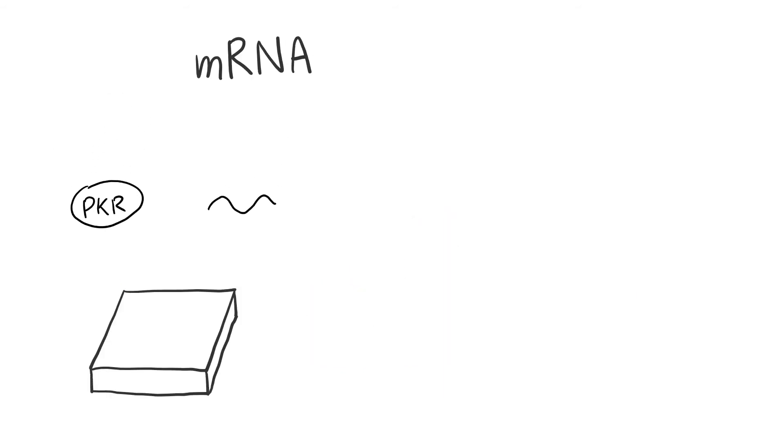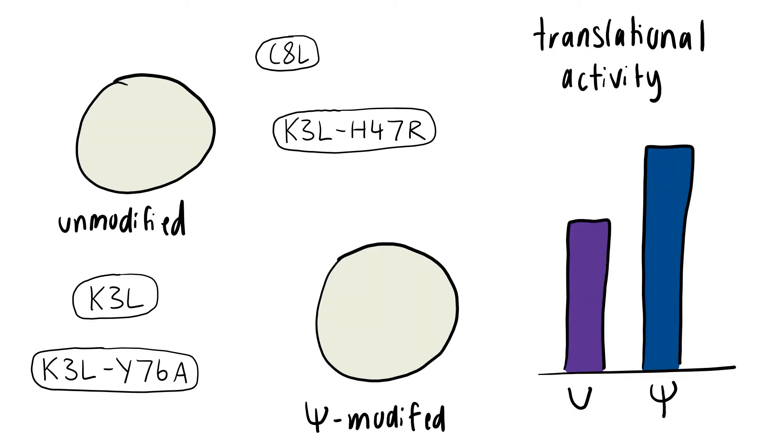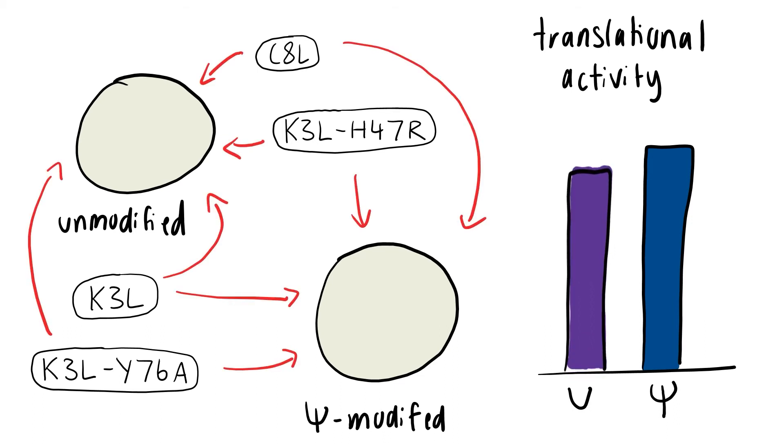Using purified PKR and measuring activation using phosphorimages, they found that modified transcripts had less PKR activation compared to unmodified transcripts, which was supported in HEK293T with Western blotting using an antibody that detected activated PKR. Viral proteins known to reverse PKR-mediated inhibition of translation were used to confirm PKR's role when translation of unmodified transcripts increased but not modified transcripts.